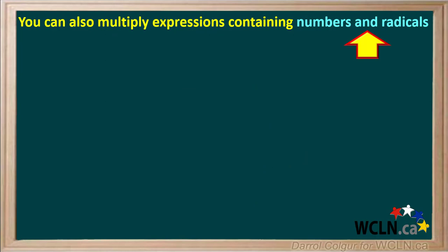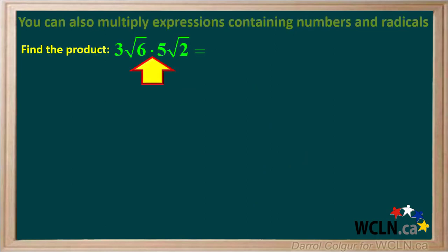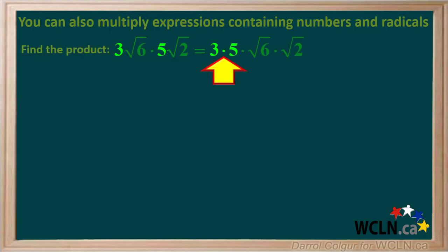You can also multiply expressions containing numbers and radicals. We are asked to find the product 3 root 6 times 5 root 2. We multiply the numbers 3 times 5 and the radicals root 6 times root 2.